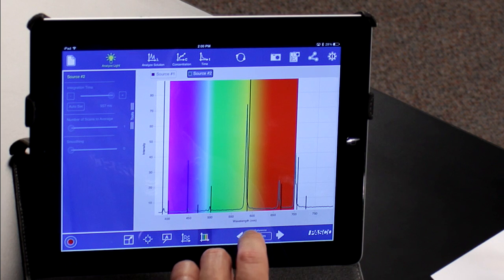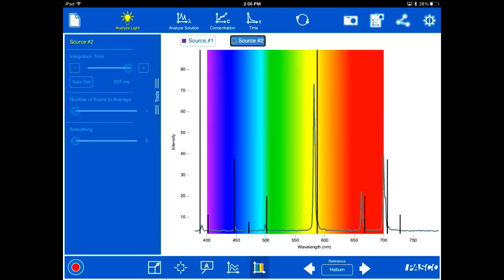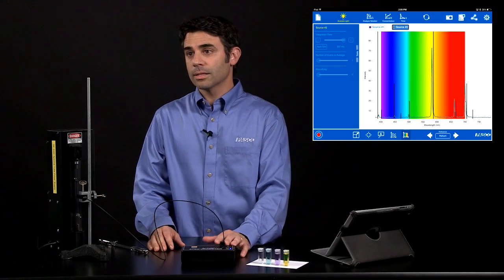So there we have the expected peaks and the experimental peaks. They're very close to each other, actually within a couple of percentage points. So that's analyzing light.